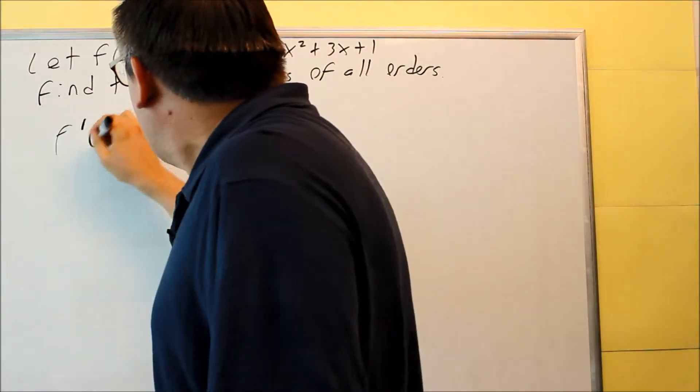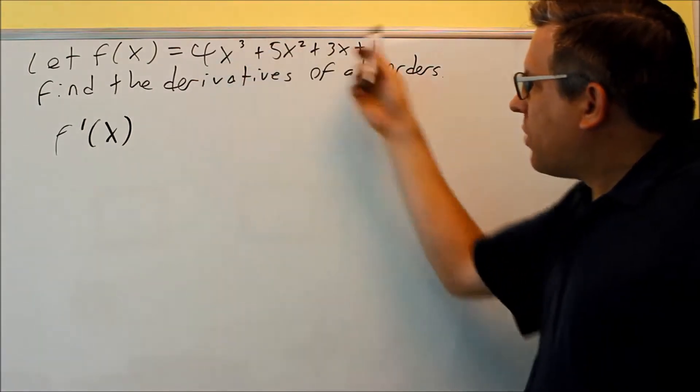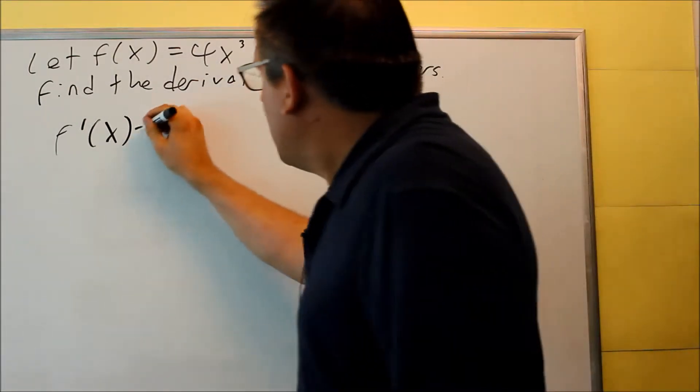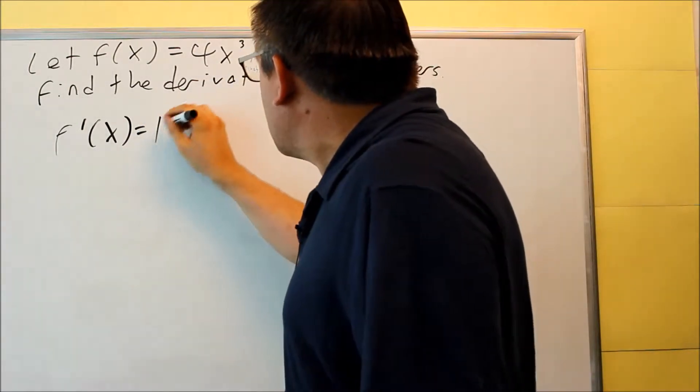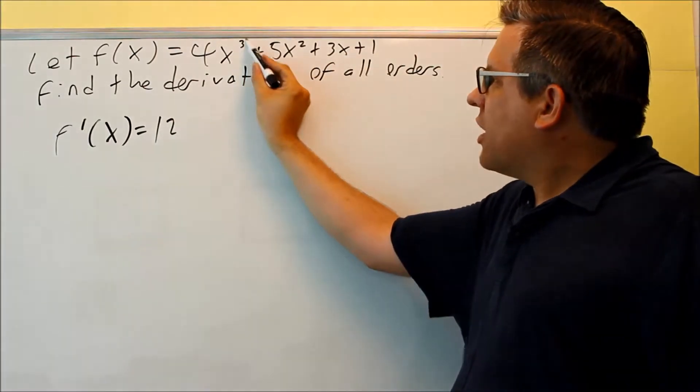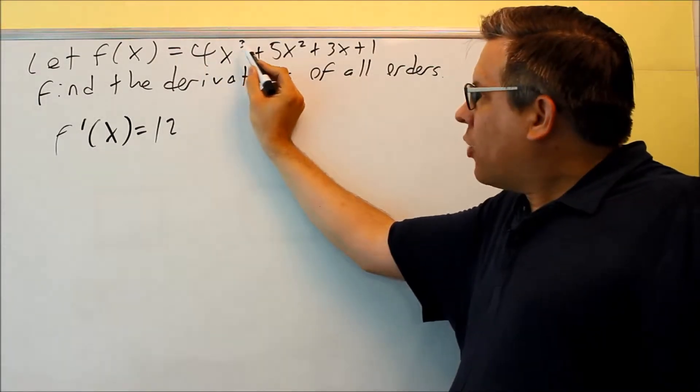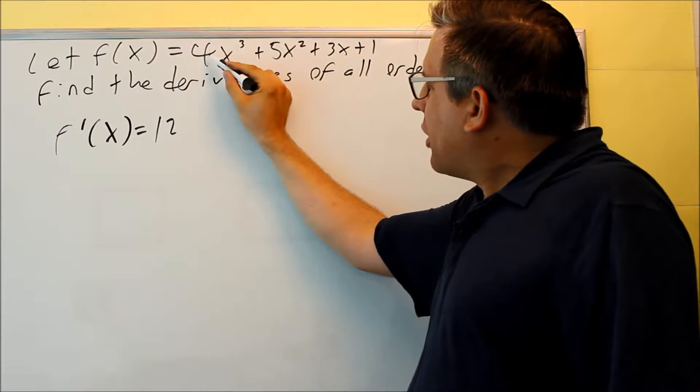So we have f of x. Let's do the first derivative. We're going to use the power rule for this one. So three comes down, we get 12. So one way to do this is you can just take the power up here and you can multiply it by that one, then subtract this by one. So we're going to multiply these, that's 12x squared.